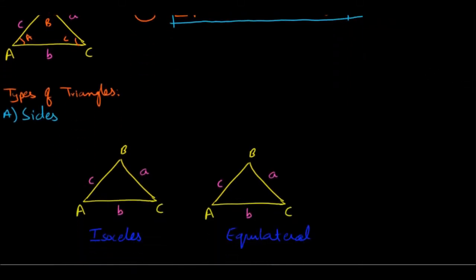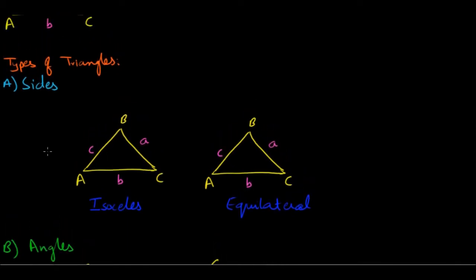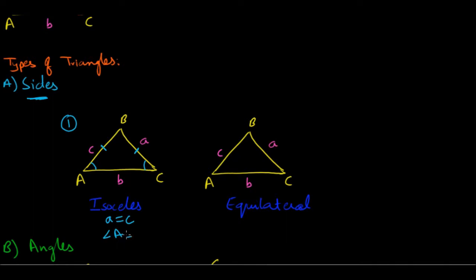Next, let's look at the types of triangles. The first type is based on sides. The first special type is where two sides are equal — for example, side a and side c are equal, represented by single dashes. This is known as an isosceles triangle. When two sides are equal, the angles opposite to those equal sides are also equal, so angle A and angle C are equal.